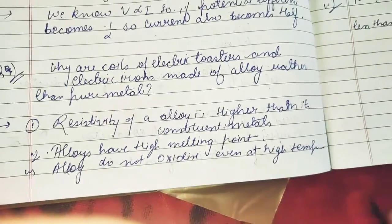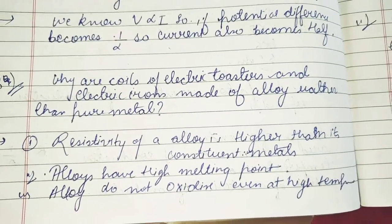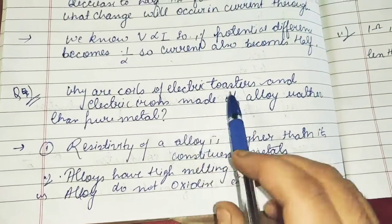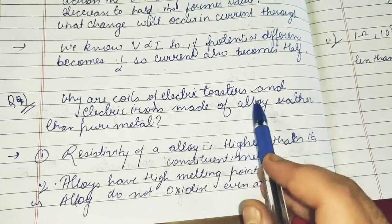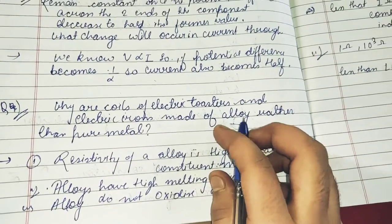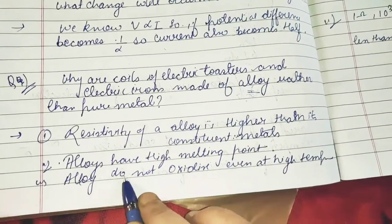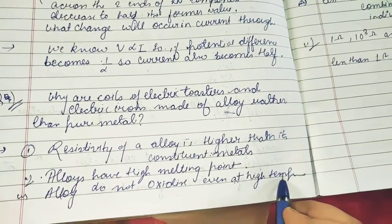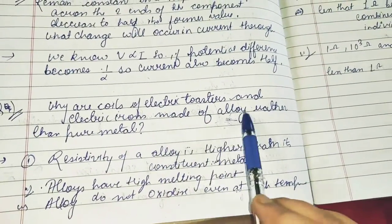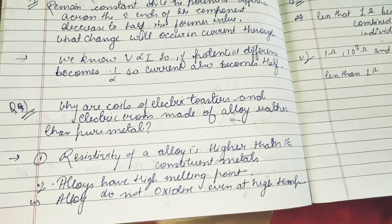Why are coils of electric toasters and electric irons made of alloy rather than pure metal? A homogeneous mixture of two or more metals and a non-metal is called an alloy. The resistivity of an alloy is higher than its constituent metals. Alloys have a high melting point, and alloys do not undergo oxidation even at high temperatures. These are the reasons these alloys are used in such appliances.